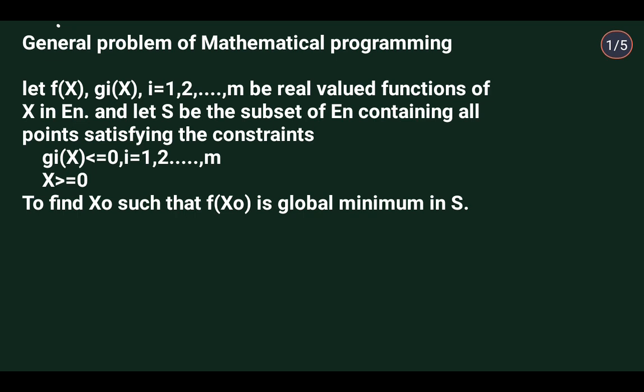Then we need to find a point x-naught in S such that f of x-naught is a global minimum. That x-naught is the solution of the general problem of mathematical programming. So, finding the point x-naught where f of x achieves a global minimum in S — that is the solution to this general problem of mathematical programming.